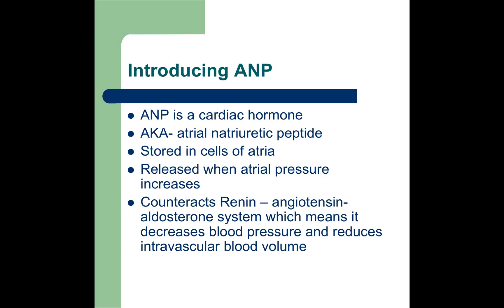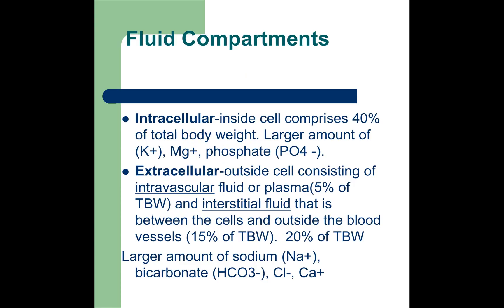We have two main fluid compartments: intracellular and extracellular. The intracellular — inside the cells — is about 40% of body weight, and the electrolytes that prefer this space include potassium, magnesium, and phosphate. The extracellular — outside the cell — includes intravascular fluid, plasma, and interstitial fluids. Electrolytes that prefer this space include sodium, bicarbonate, chloride, and calcium.